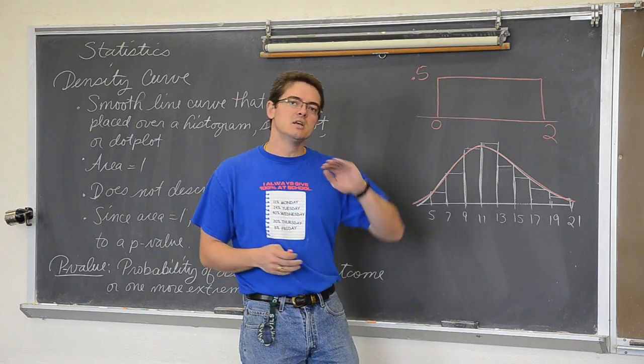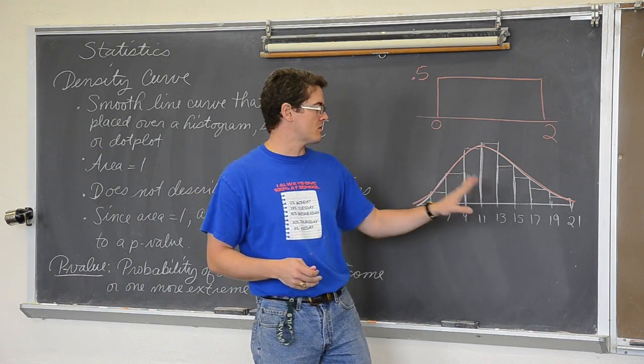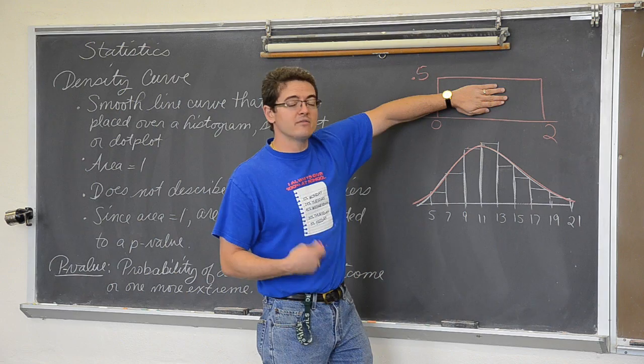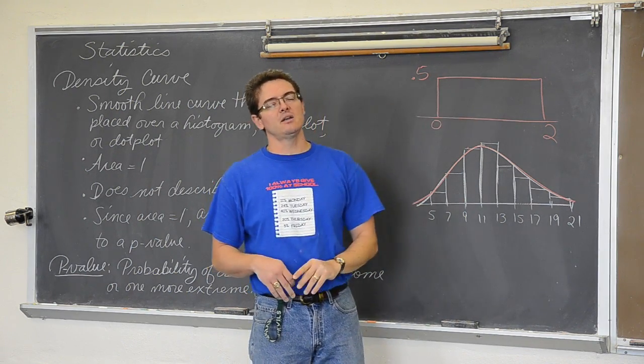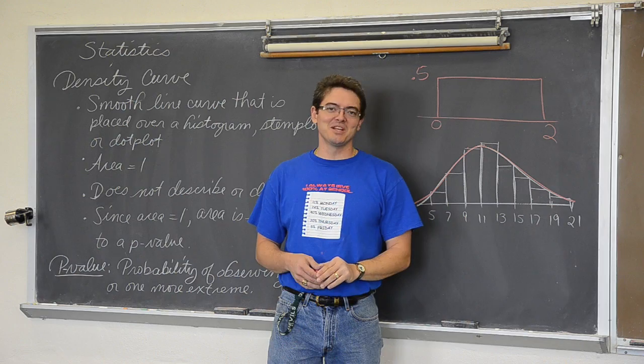So density curves, smooth over lines over the histogram. We need those areas to be one, or maybe even some weird geometric shape. Let's finally define what normal really is.